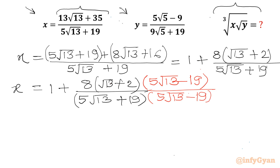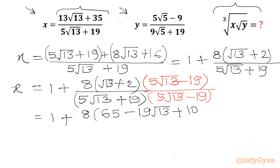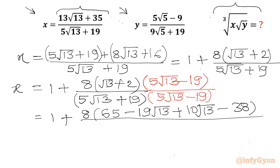So I will write 1 plus, with 8 common as it is. Now let us multiply: √13 times 5√13 gives 65, then √13 times negative 19 gives minus 19√13. Next product would be 10√13 minus 38, over (a + b)(a − b). So we can write (5√13)² minus 19² in the denominator.